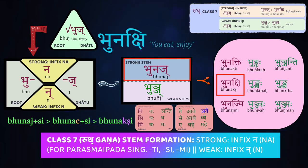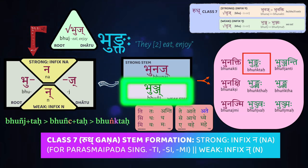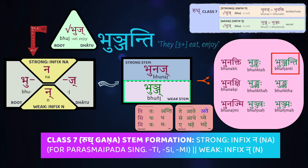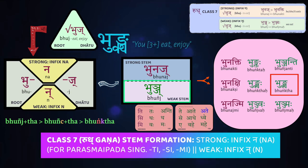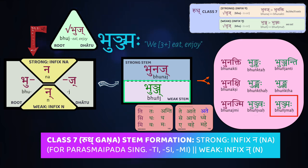Finally, there's no sandhi when you add mi to bhuñaj — you just get bhuñajmi, meaning I eat or I enjoy. For the other forms, we use the weak stem bhuñj and get bhuñktaḥ — the two of them are eating. Notice that not only has the palatal j jumped up to the velar k, but the palatal nasal ñ has become the velar nasal ṅ. So we get bhuñktaḥ. For the plural, we get bhuñjanti — they eat. For second person, bhuñkthaḥ — you two eat — and yūyam bhuñktha — you eat, plural. For the first person: bhuñjvā and bhuñjmaḥ — we eat or enjoy.